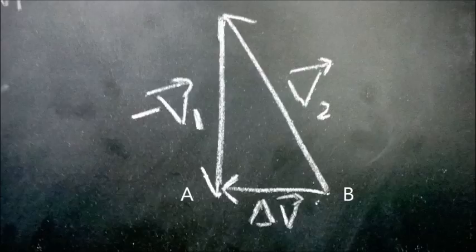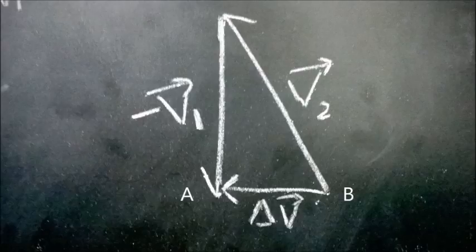Now, let us look at these two velocity vectors. Since the lengths are the same, they can be the radii of a circle. Look at the circle formed by them.